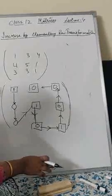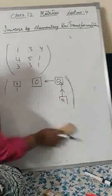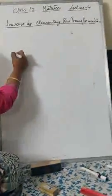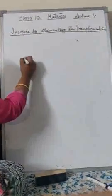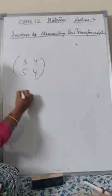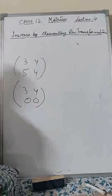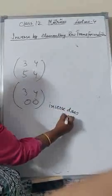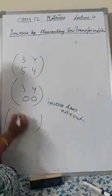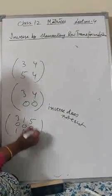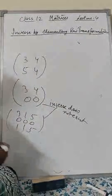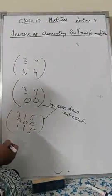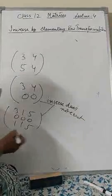Questions will be explained on the zoom class. One last thing: whenever you apply this method and any row becomes all zeros in a 2×2 or 3×3 matrix, it means the inverse does not exist. The main conclusion: if after applying operations any row or column becomes all zeros, write that the inverse does not exist.